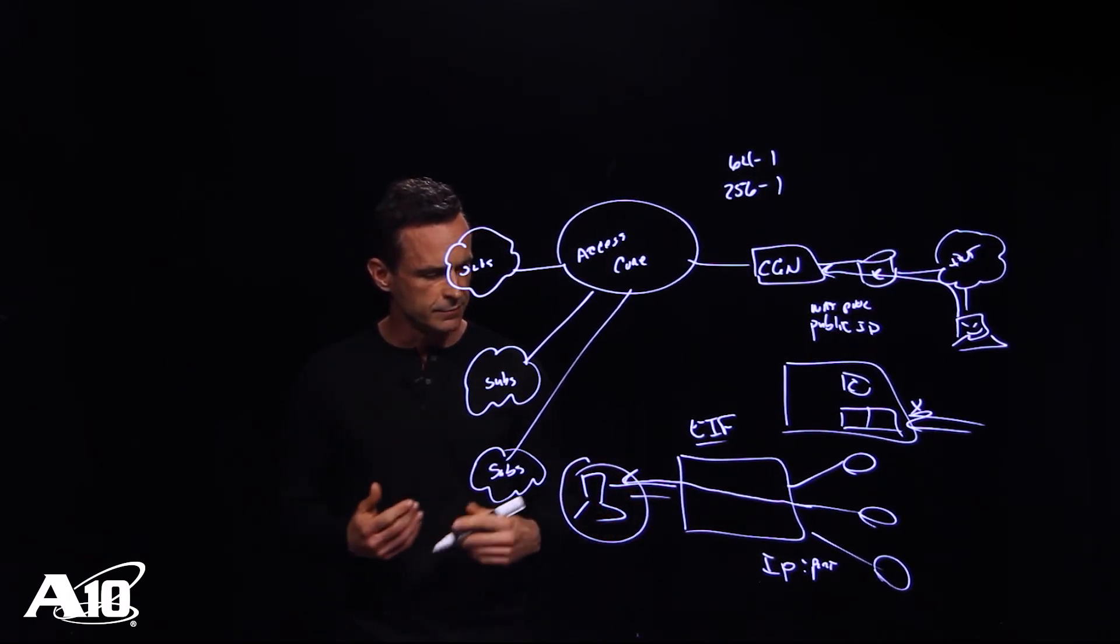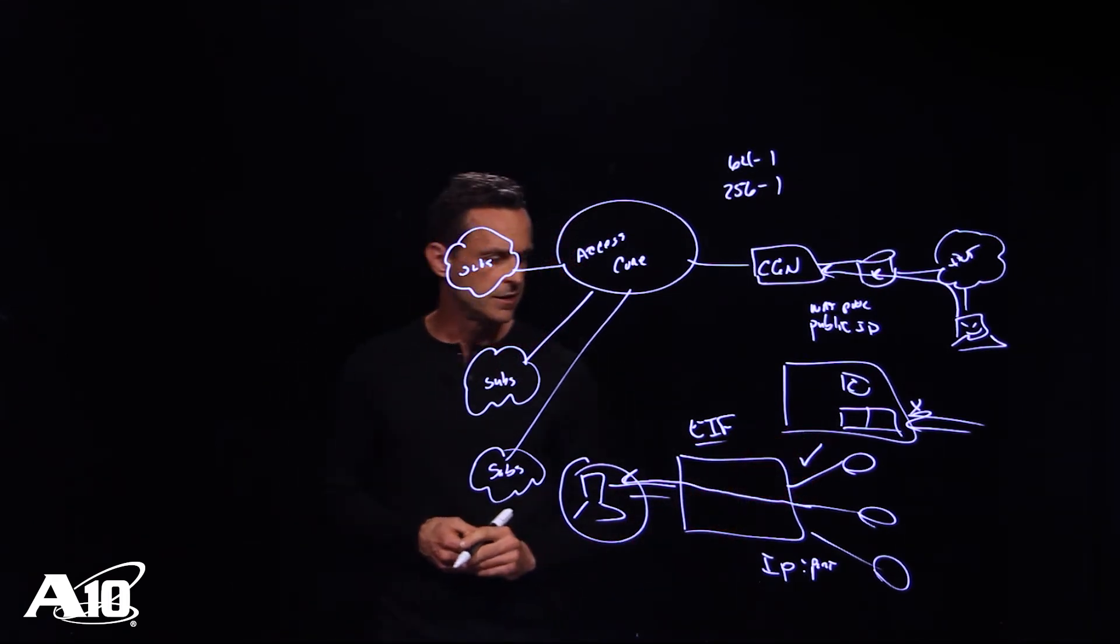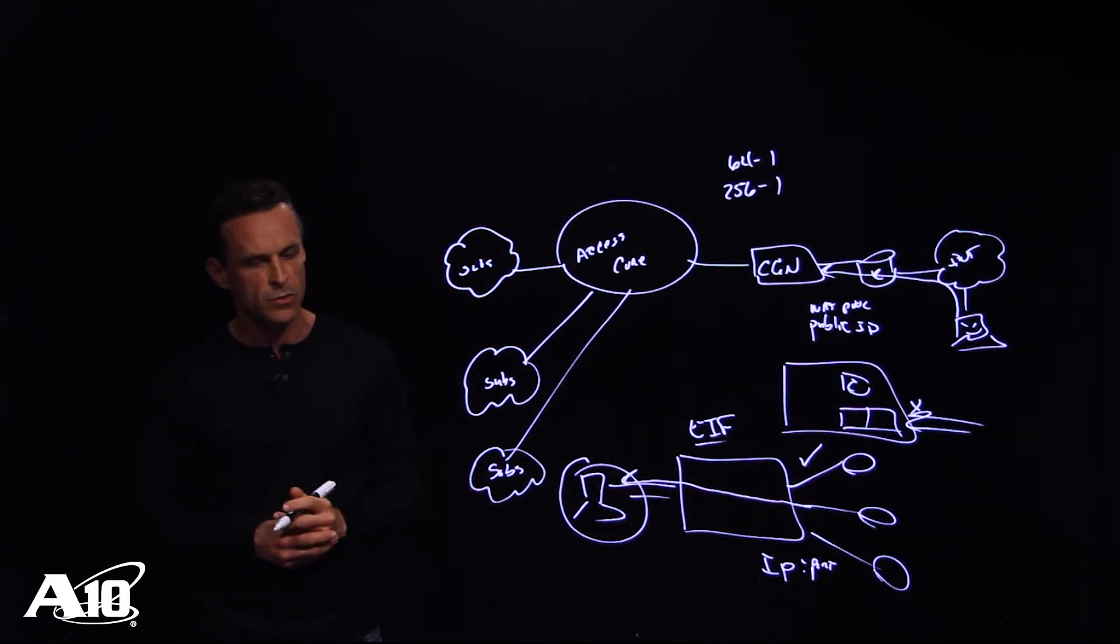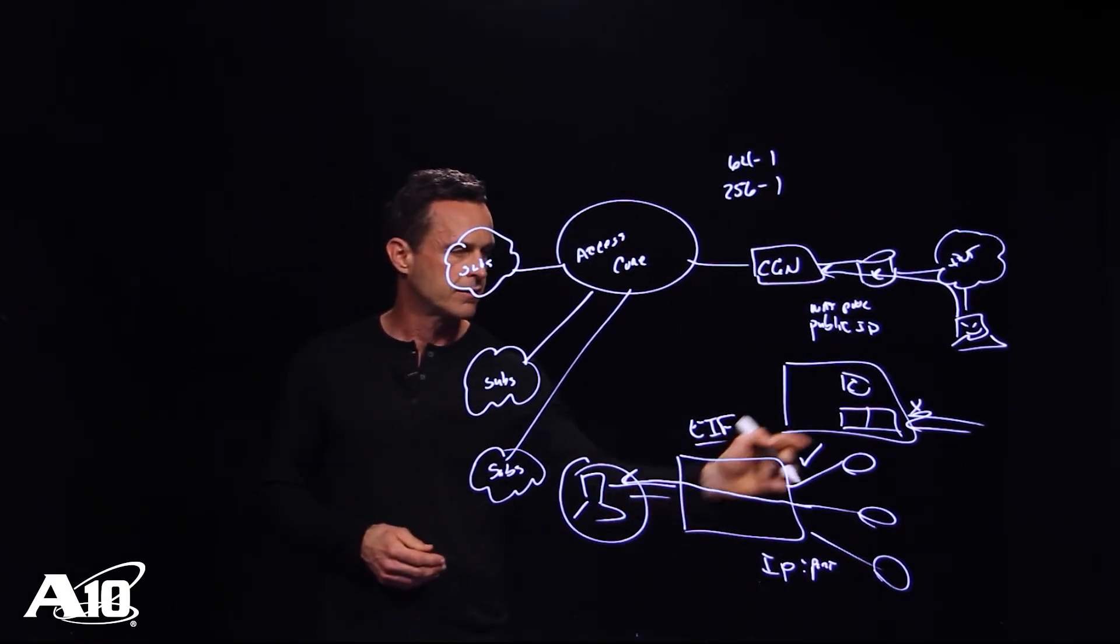So in this particular attack we have a couple of effects. One is we are reducing the ability to carry traffic on our core links due to the volumetric attack. We're also passing it through the box causing compromise to the actual hardware itself.